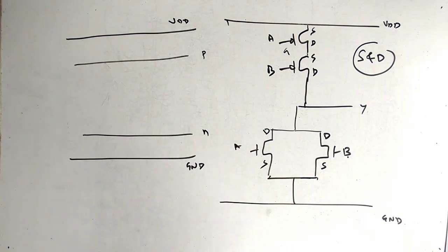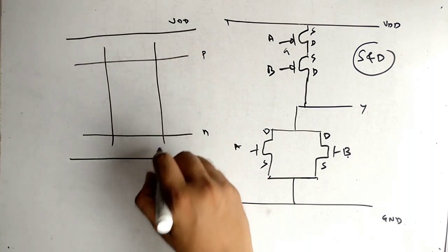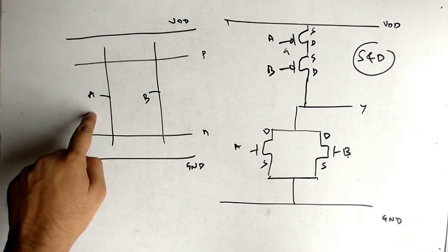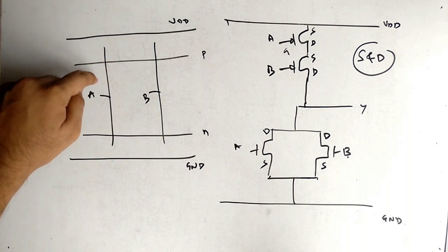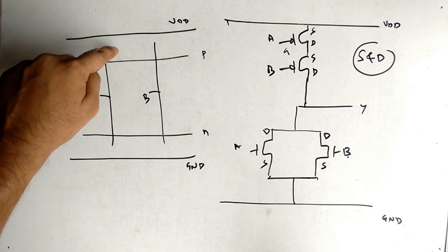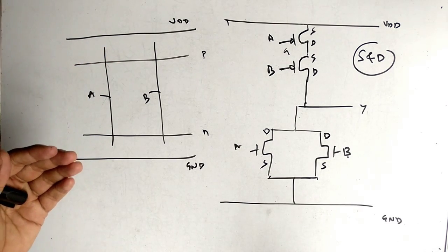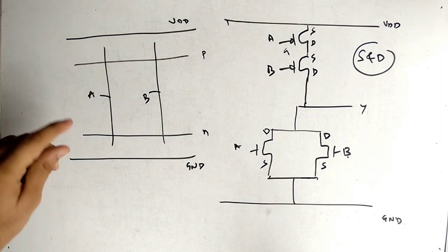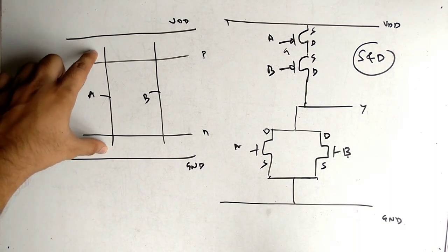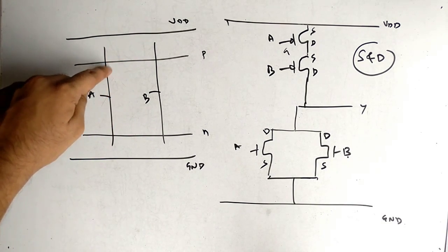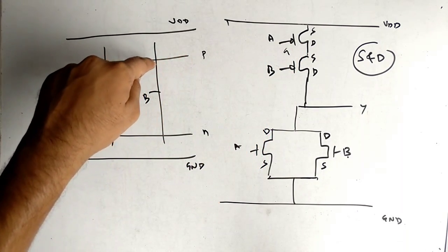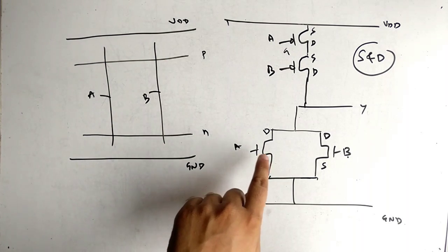We have P diffusion and N diffusion lines. Now we draw the polysilicon line — this is A and this is B, representing the gate part. VDD, ground, P diffusion, N diffusion, and the polysilicon lines are laid out. PMOS A is represented here and PMOS B is represented here; similarly, NMOS A and NMOS B are represented on the lower diffusion line.